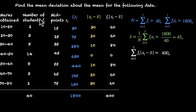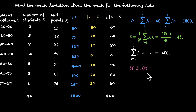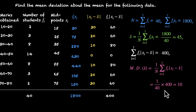As our last step, the mean deviation about the mean is this sum divided by the total number of values: (1/N) × Σf_i |x_i − x̄| = 400 ÷ 40 = 10. So our mean deviation about the mean for this data is 10.